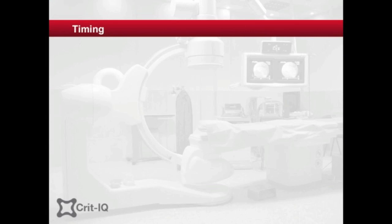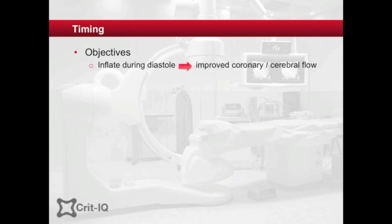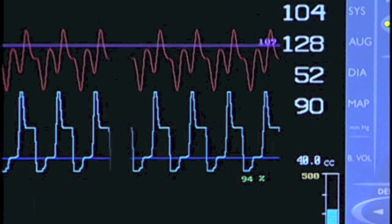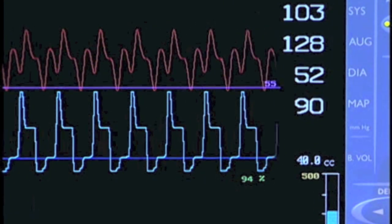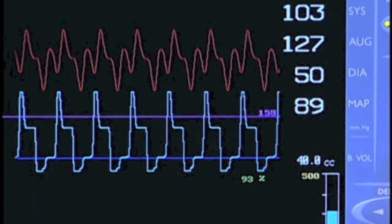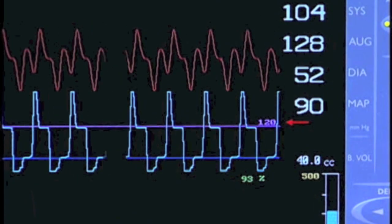Timing. The objective of the intra-aortic balloon pump is to inflate the balloon during diastole, improving diastolic flow of blood in the coronary and cerebral arteries, and to deflate immediately before systole, reducing the afterload against which the weakened heart is contracting. The waveforms taken from the aortic root arterial pressure can be used to determine the appropriateness of the timing of inflation and deflation.